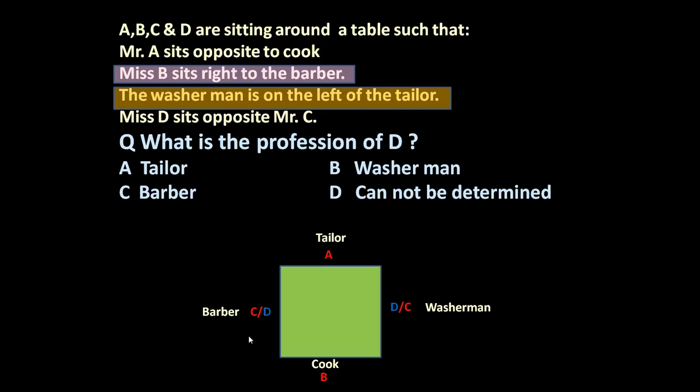A is tailor. B is cook. C or D is barber. D or C is the washerman. So the given question is what is the profession of D. D can be washerman or D can be barber also. So we cannot determine whether D is barber or washerman. So answer is cannot be determined.